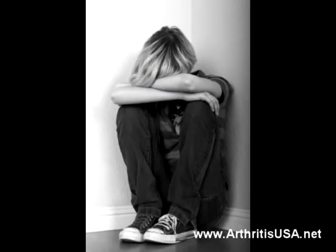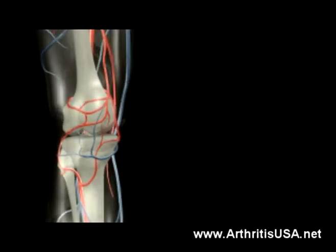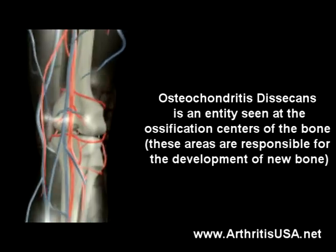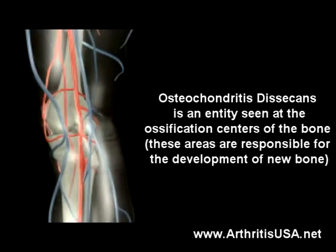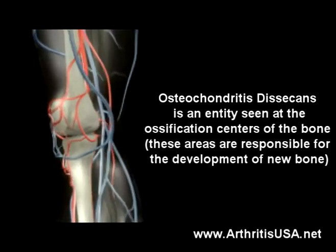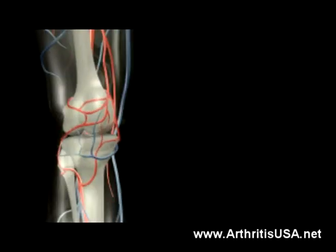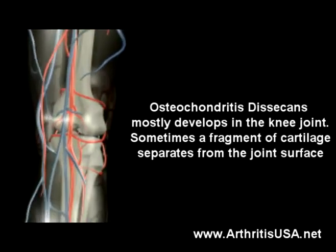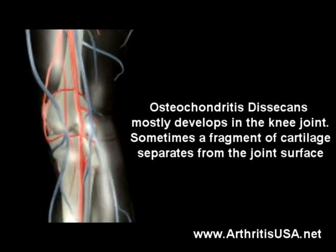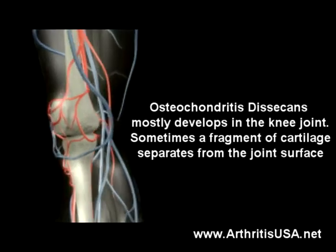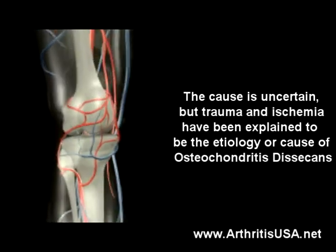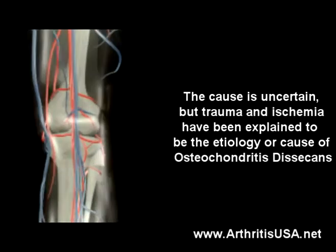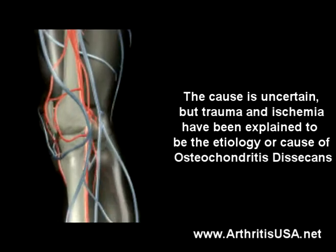Osteochondrosis dissecans is typically seen in young males. It is an entity seen at the ossification centers of the bone — areas responsible for the development of new bone. It mostly develops in the knee joint. Sometimes a fragment of cartilage separates from the joint surface. The cause is uncertain, but trauma and ischemia have been proposed as contributing factors to the etiology.